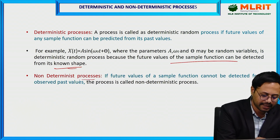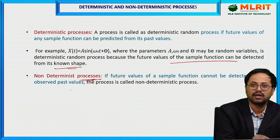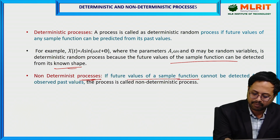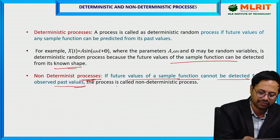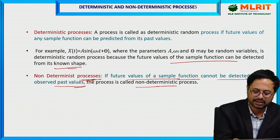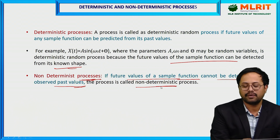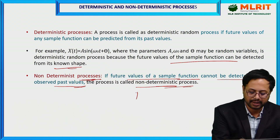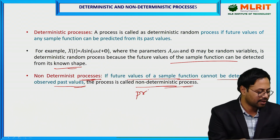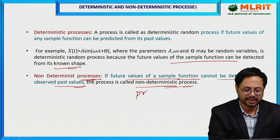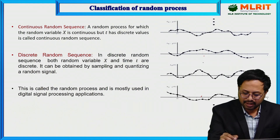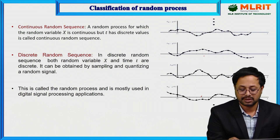Non-deterministic random process: if the future values of the sample function cannot be predicted from its observed past values, it is called a non-deterministic process. The concept of probability, random variables, and random process — all of these are non-deterministic processes.